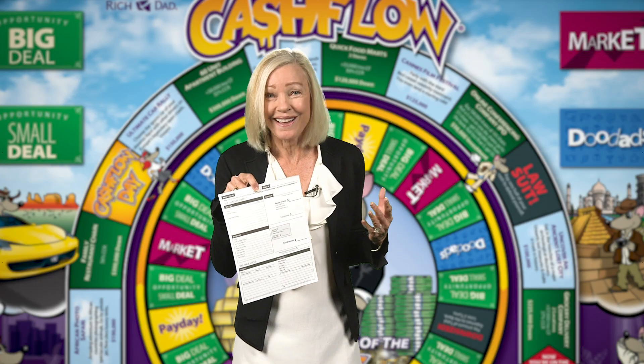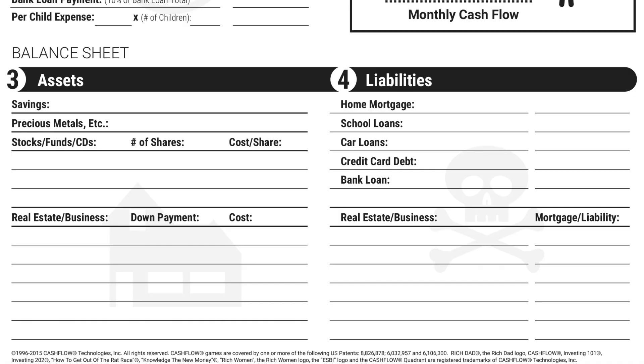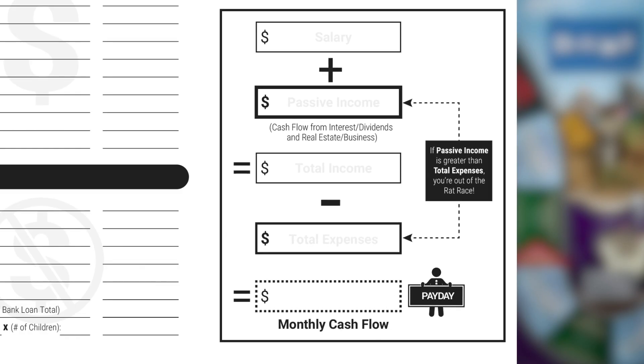The liabilities could be the loans you take out on your properties or your businesses. The third statement, which is very exciting, is the statement of cash flow — and it's just that: cash flowing in and cash flowing out. In the cash flow game, we have combined all three statements, and the purpose is to show you the relationship between them and how money flows between all of them.